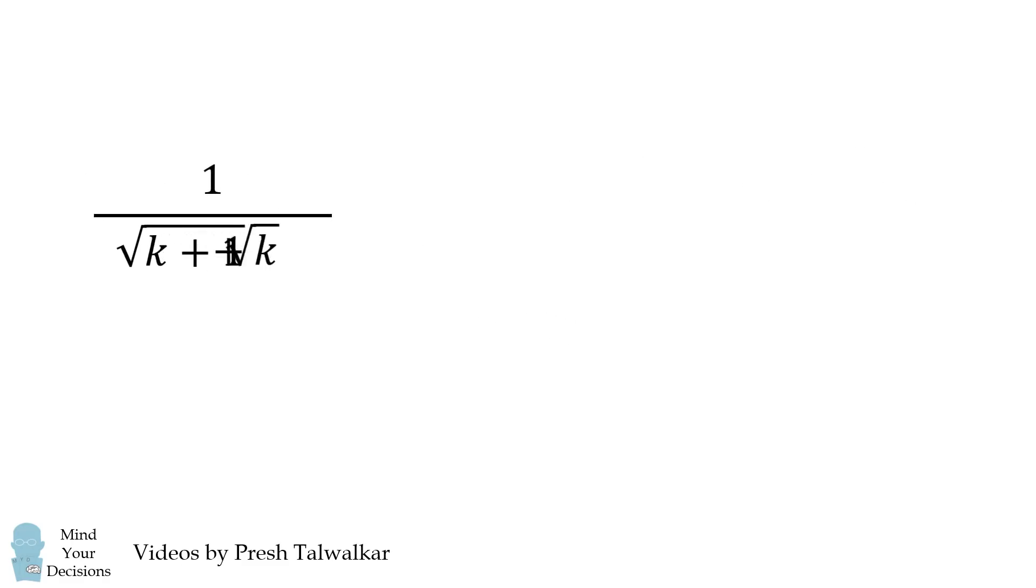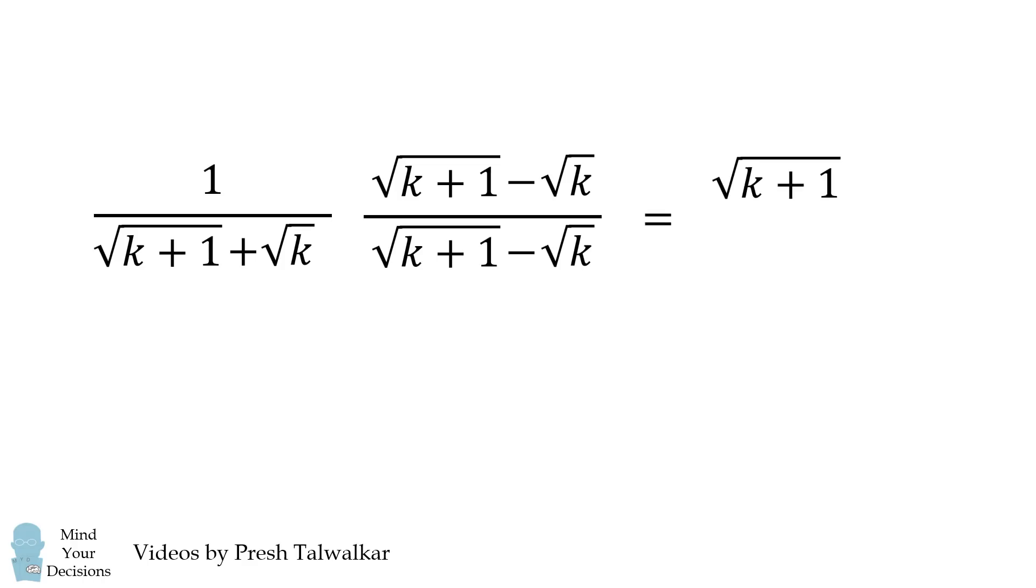First I'll flip the two terms in the denominator. Now we'll multiply both the numerator and denominator by the square root of k plus 1 minus the square root of k. If we multiply both the numerator and denominator it's the same thing as multiplying by 1. The numerator will simplify to be the square root of k plus 1 minus the square root of k.